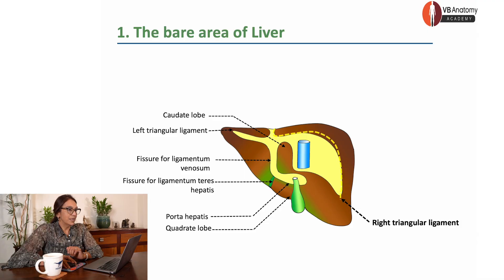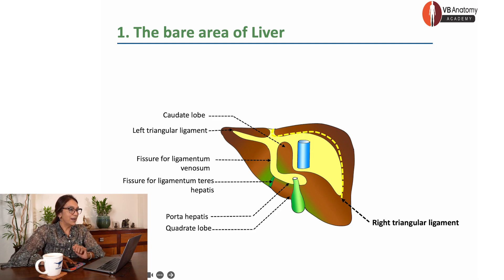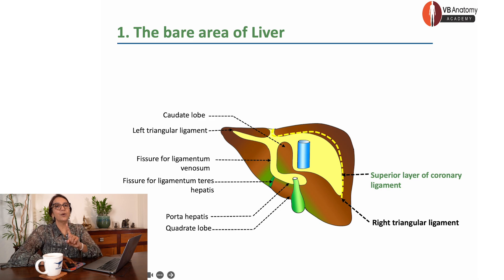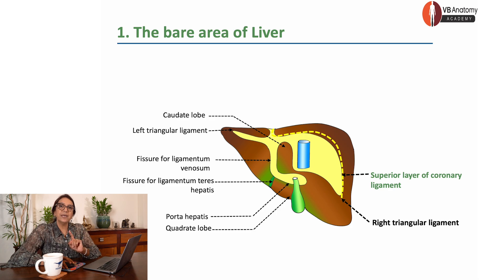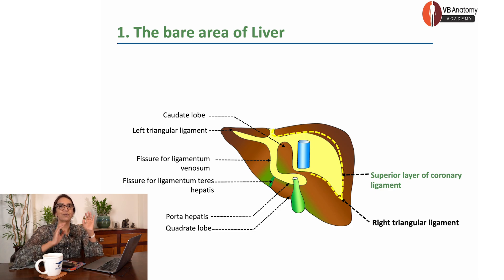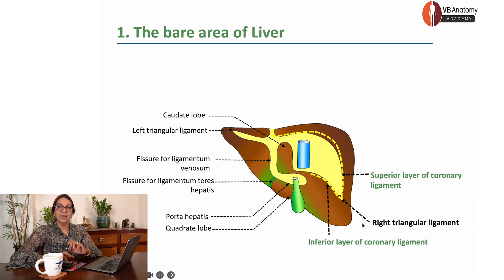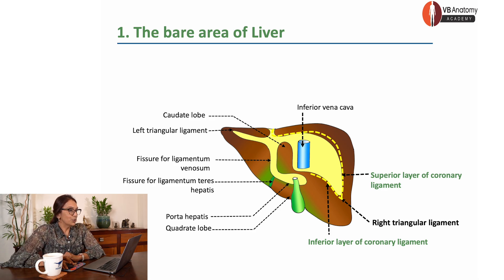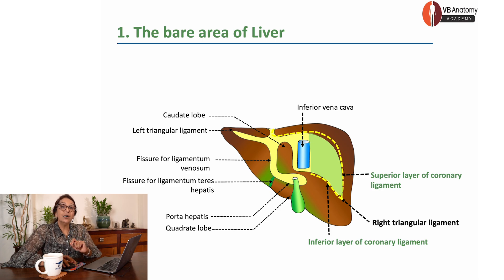Let's dive into that. Here is a part of the falciform ligament. The layer that went on the right side went on to form the superior layer of coronary ligament. So the upper border of the bare area of liver is formed by the superior layer of coronary ligament. The inferior border is formed by the inferior layer of coronary ligament. The two unite to form the right triangular ligament — a ligament that goes from the liver to the diaphragm. And here you can see it is related to the inferior vena cava. This triangular area that is formed is called the bare area of liver.